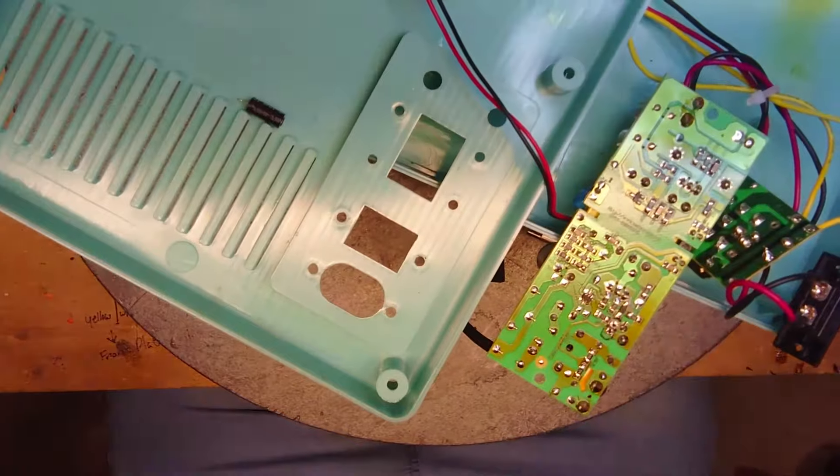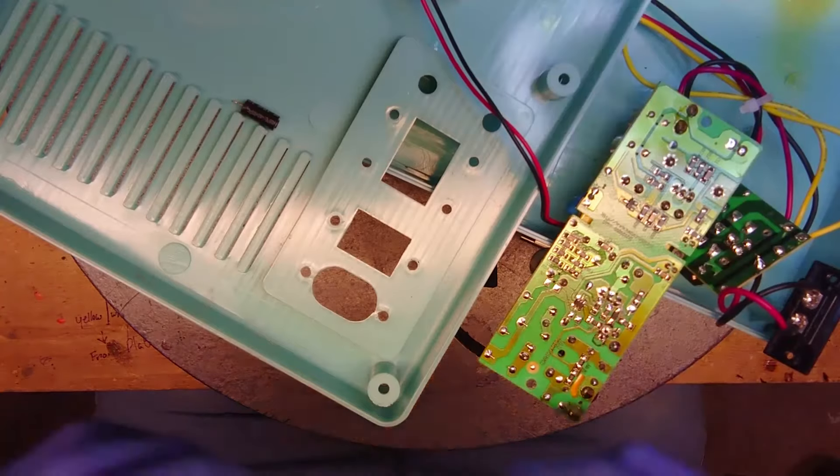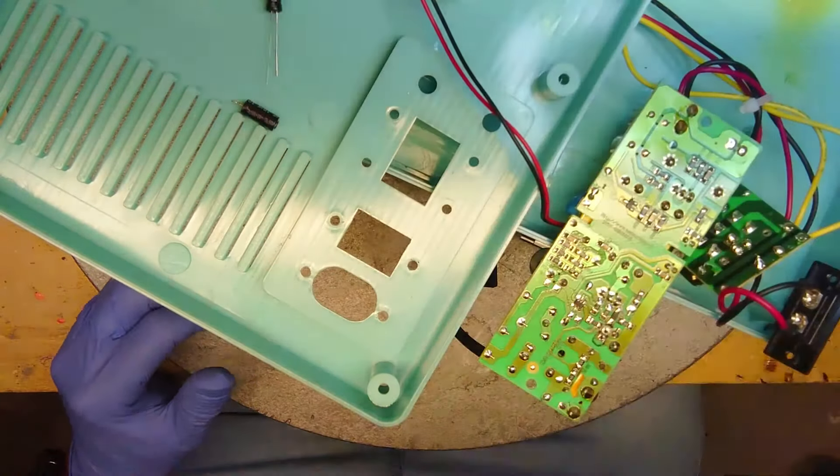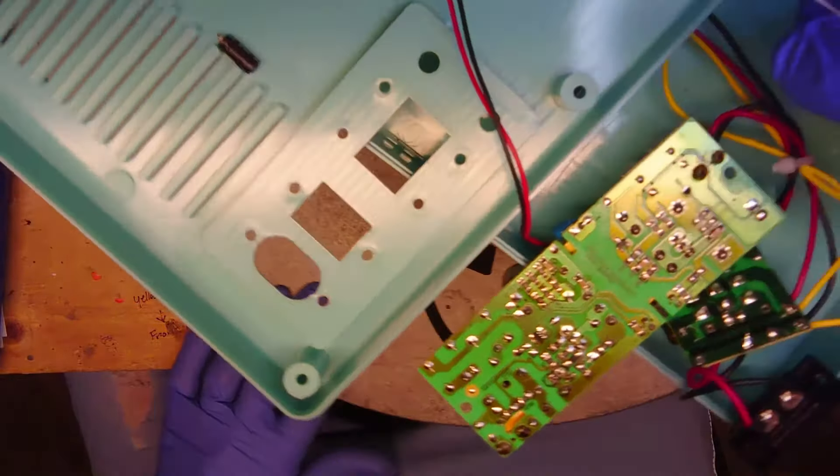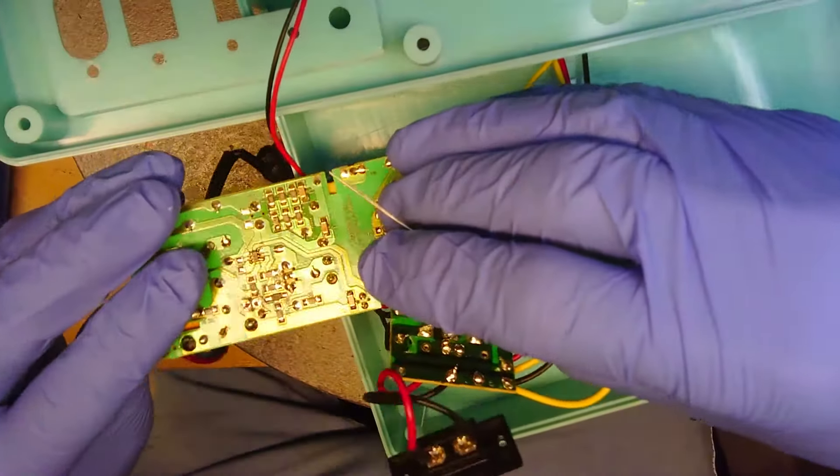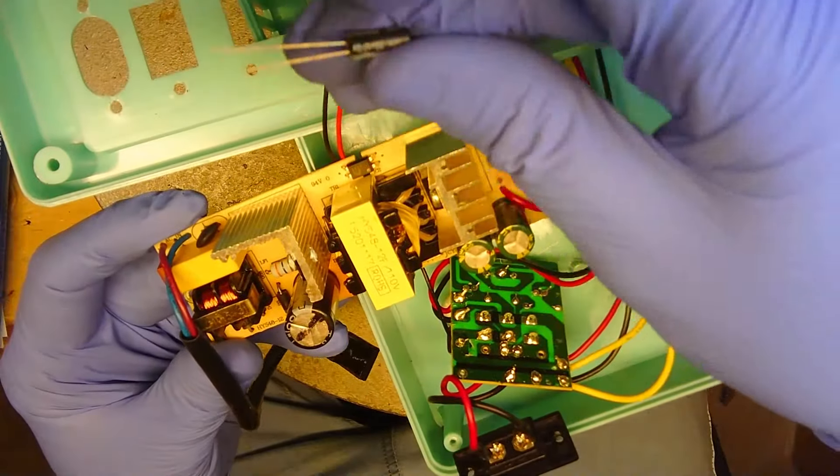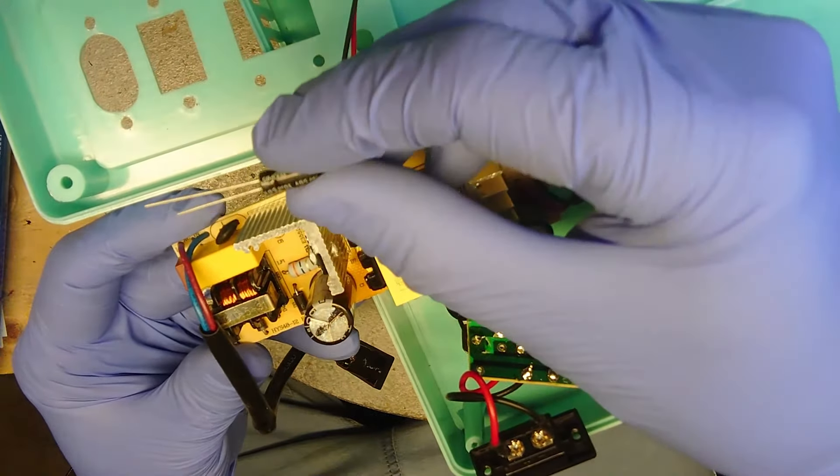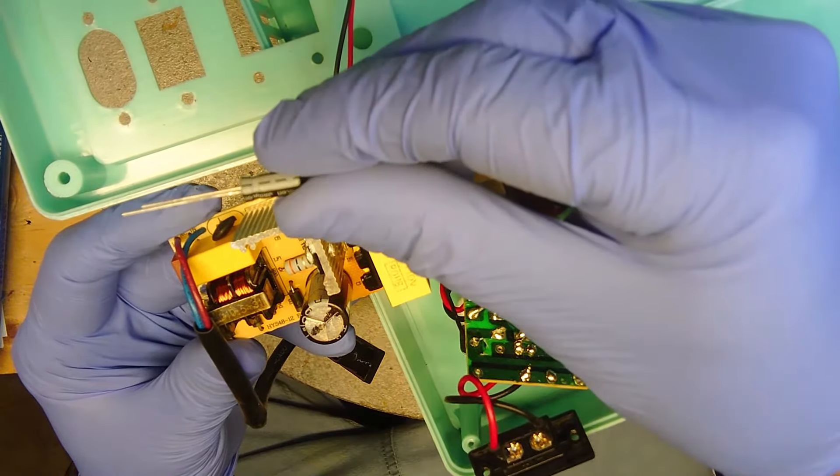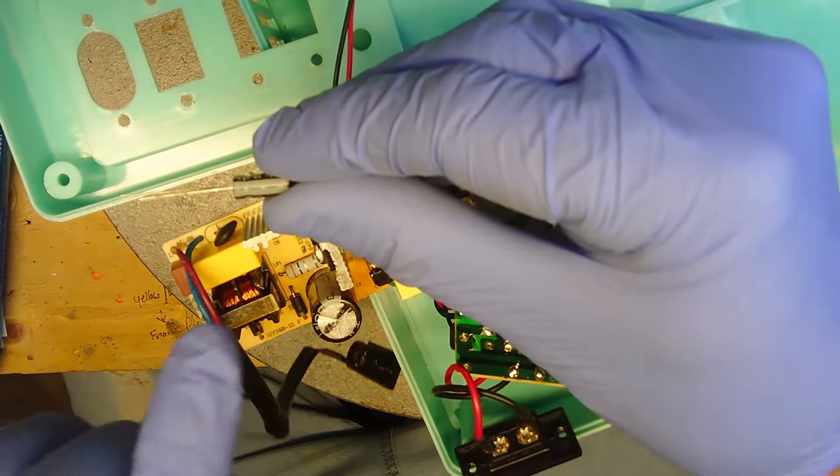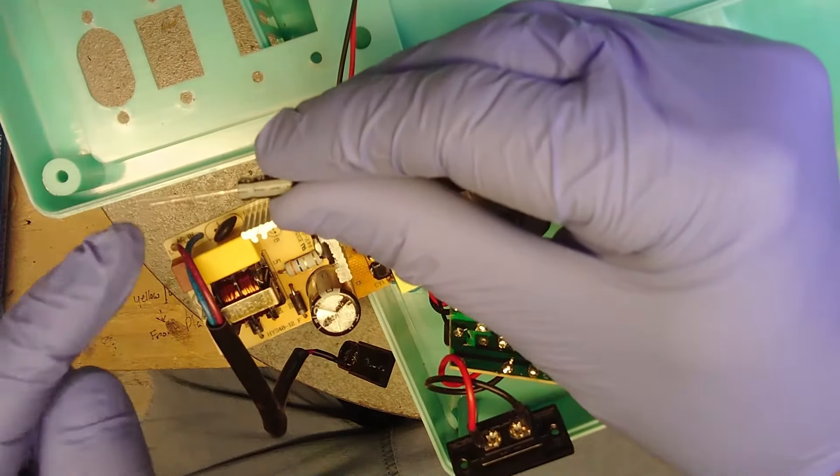So this capacitor will be changed with this capacitor. We'll do that right now and I know this is gonna be working. Again, you need to make sure that the long leg is the positive, the shorter leg is the negative. You can tell by the bar here. This is the negative, this is the positive.